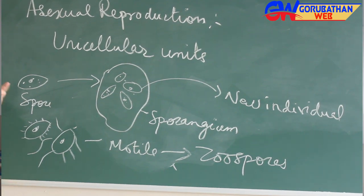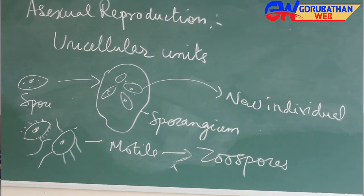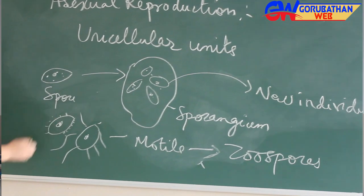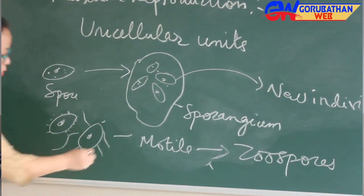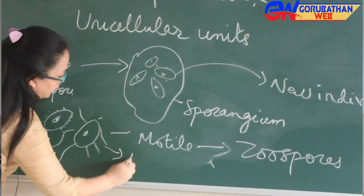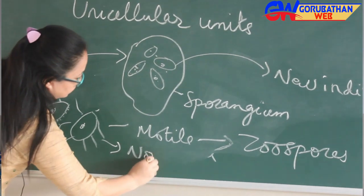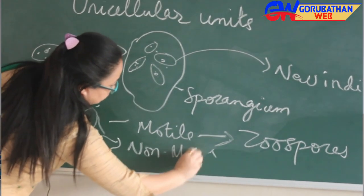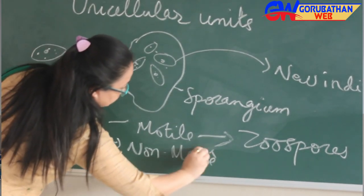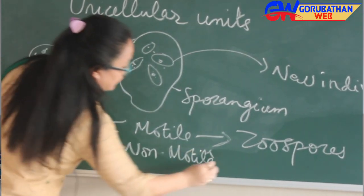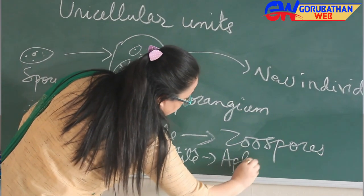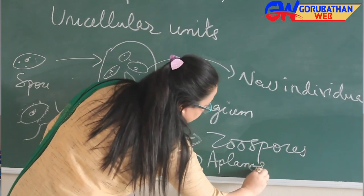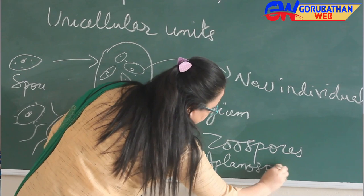And if the spores are devoid of — without — cilia or flagella, then it is called non-motile, and this type of spore is known as aplanospore.